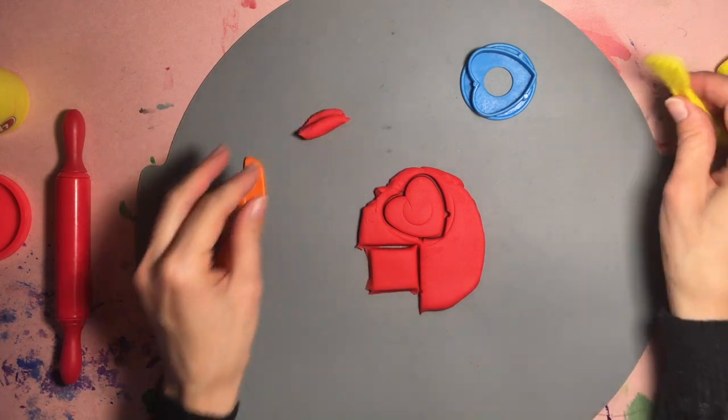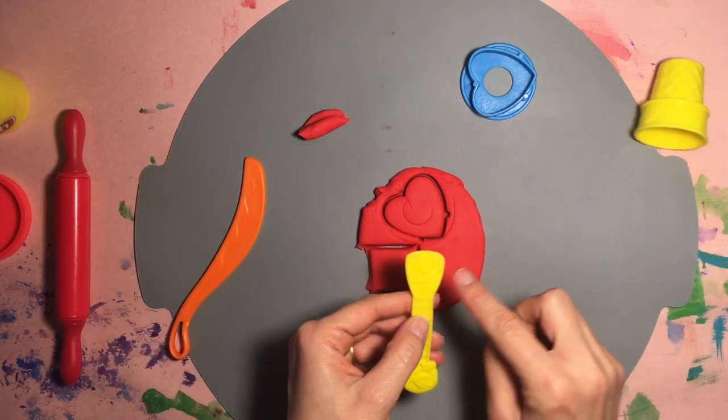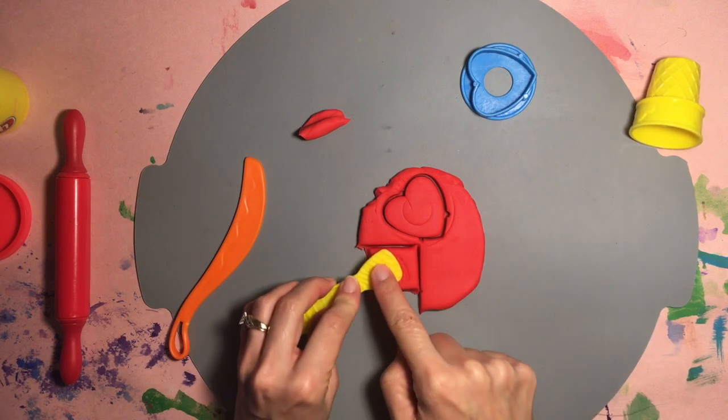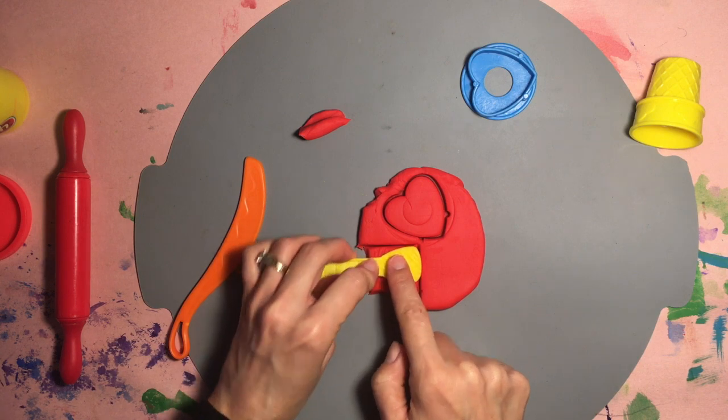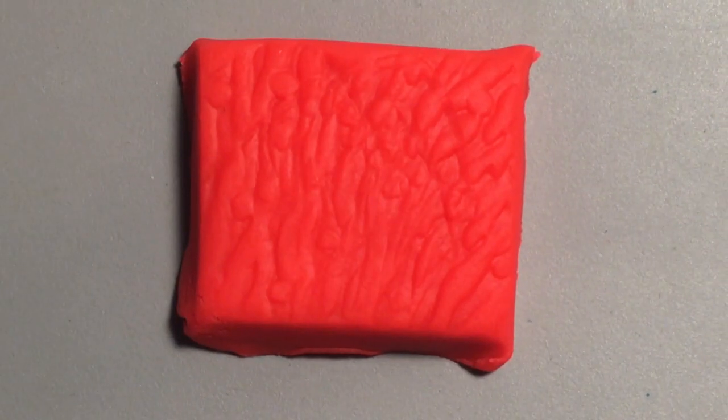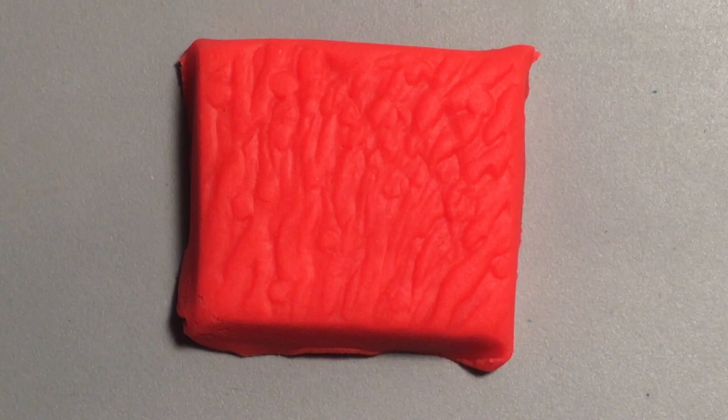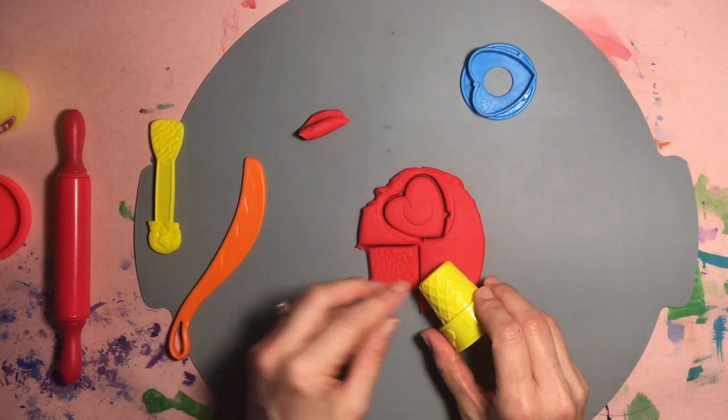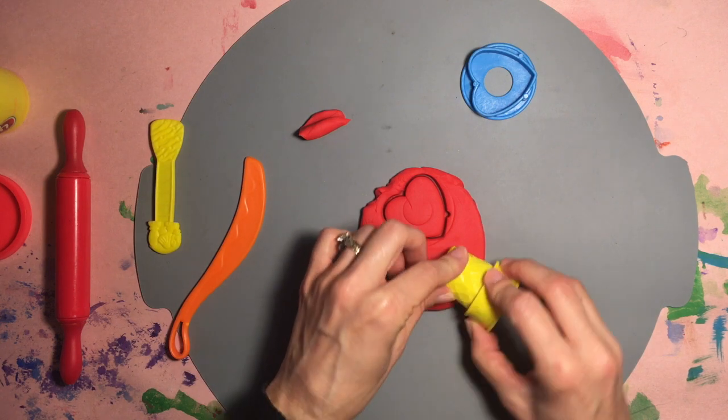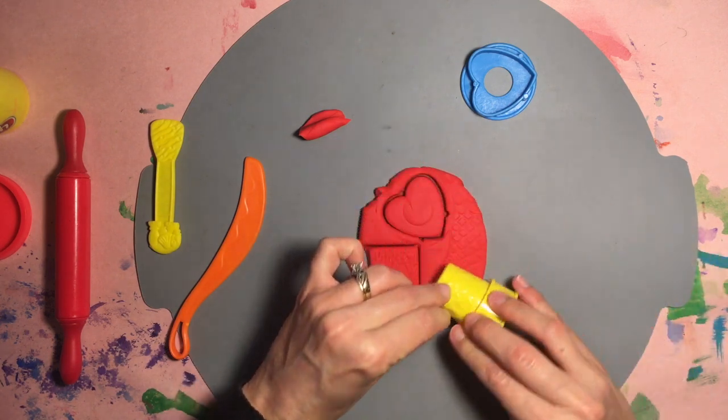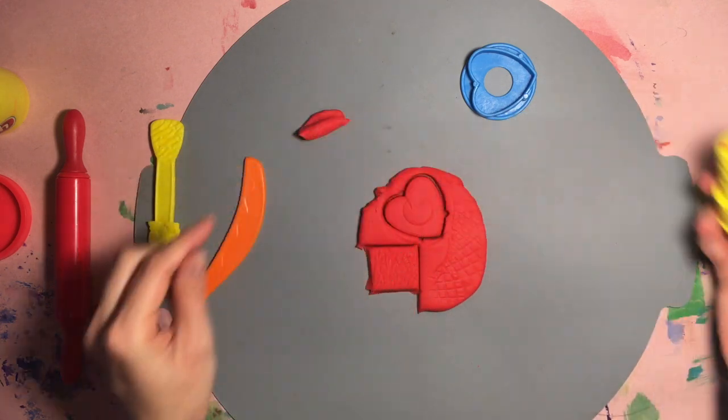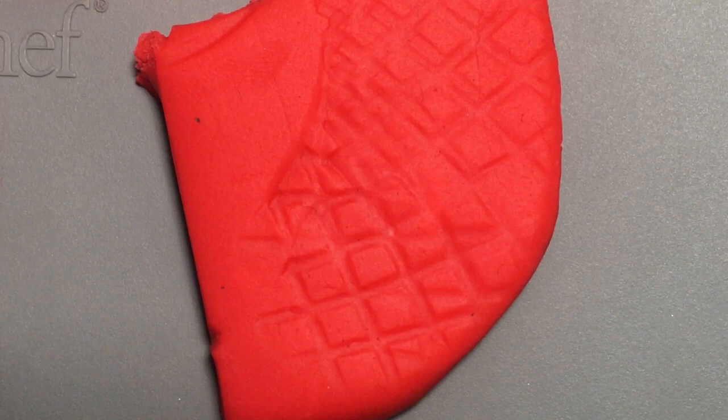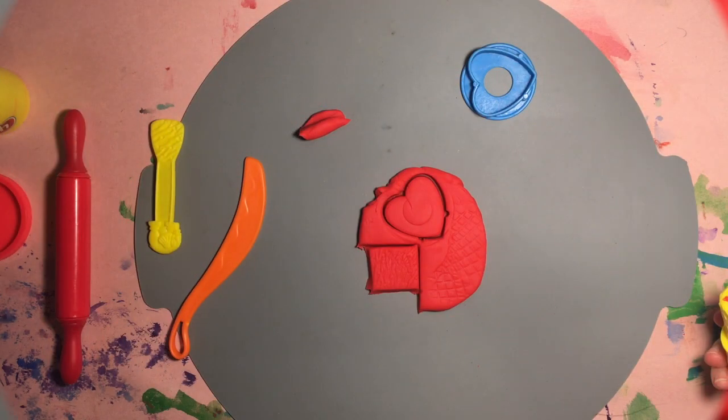You can even press some textures into objects. I think I found this little texture thing tool. Or you can find other objects like this is an ice cream cone. It makes a cool texture in the clay.